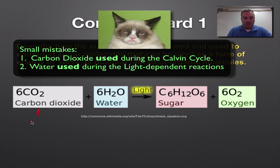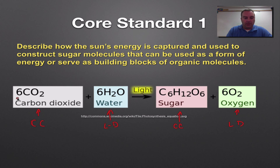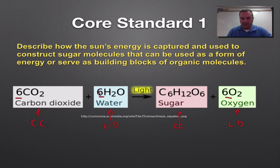Sugar is going to be created during the Calvin cycle. Oxygen is going to be created during the light-dependent reaction. Carbon dioxide is used during the Calvin cycle, and water is used during the light-dependent reaction. To balance the equation you need a six in front of everything except the sugar molecule.